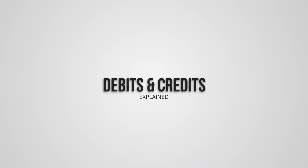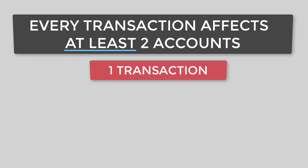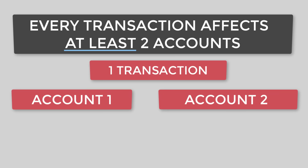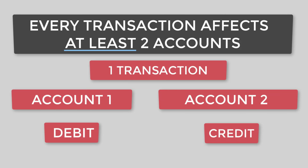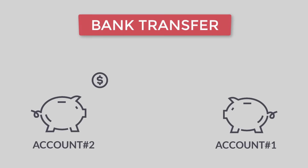In accounting, debits and credits always go together. Every transaction will have debits and credits, and at least two accounts will be affected. So remember, one transaction affects two accounts. If one account is debited, then the other one must be credited. Just think of it like a bank transfer — when you send someone money, it comes out of your bank account and it goes into their account.